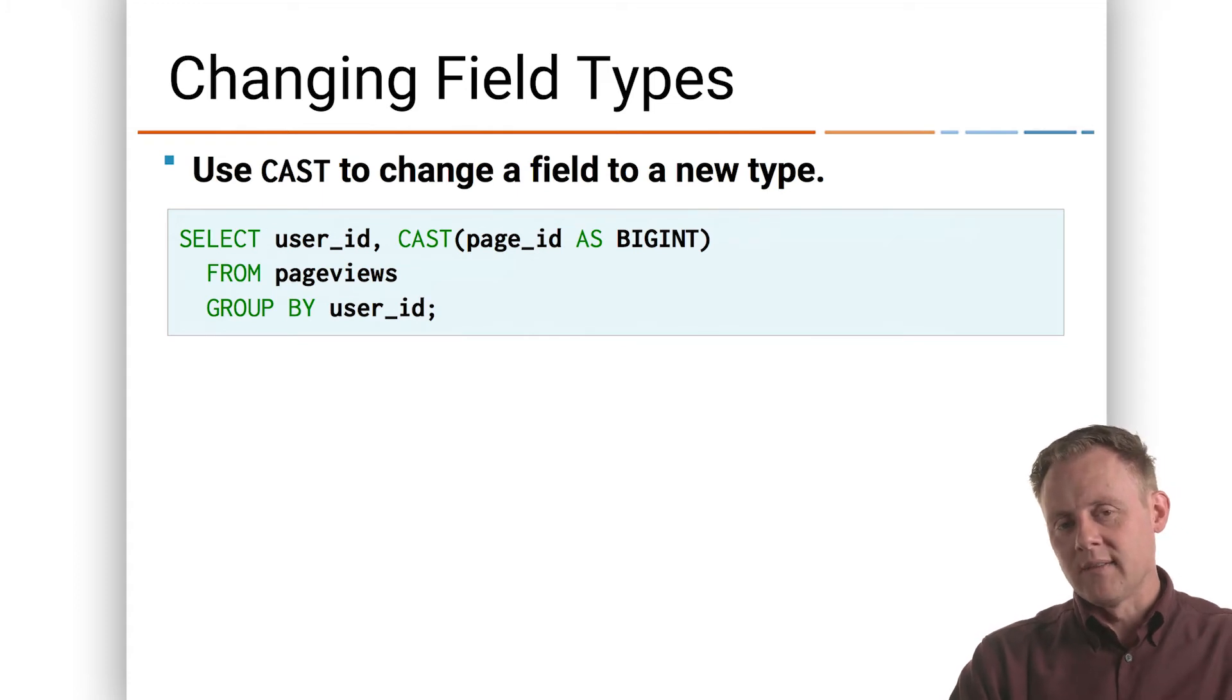I could also say create stream new page views as, and then this select, and that program would be off and running, and that new stream that I create as a result would have likely a string and a big int field called user ID and page ID, respectively.